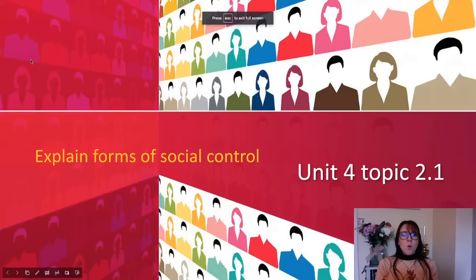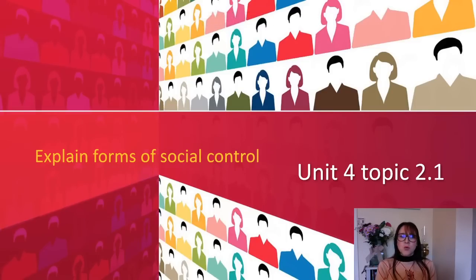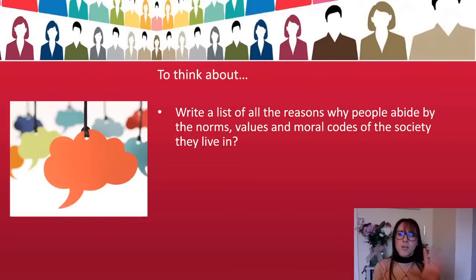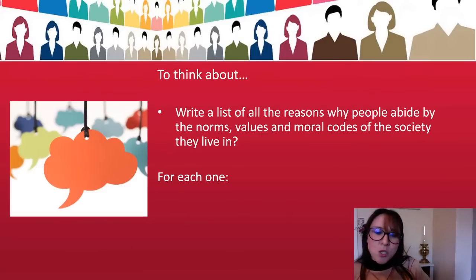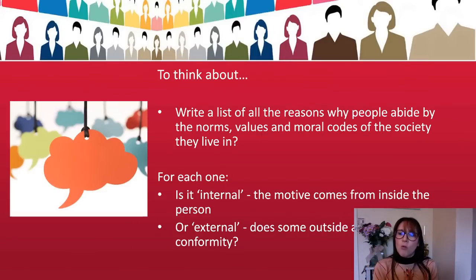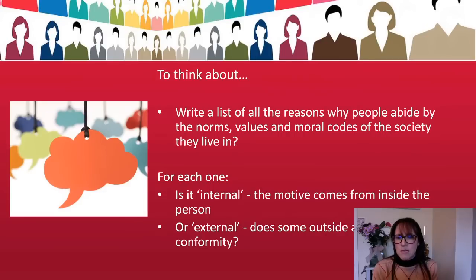2.1 is explain forms of social control. Nice and straightforward — explain means that you do not need to evaluate any of these, you just need to explain them. So first of all I got my students to write a list of all the reasons why people abide by the norms, values and moral codes of society that they live in.